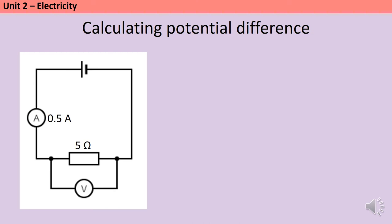The first step in using this equation is simple multiplication. You could be asked to calculate the potential difference across a component or across the power source, whether that's a cell or a battery. In this simple series circuit those two things are actually the same as each other. In this example I've been given the current as the reading on the ammeter and I've been given the resistance of the resistor. The first thing I need to do is write down my equation: V equals I times R.